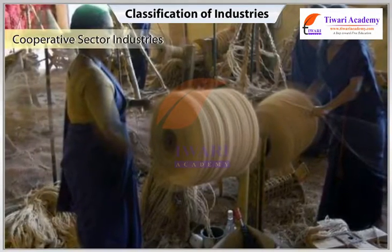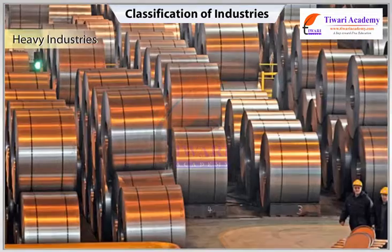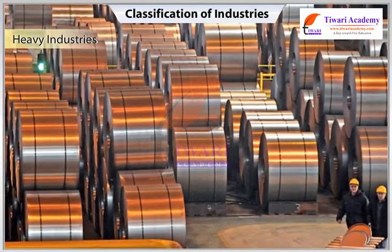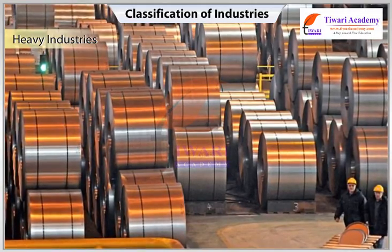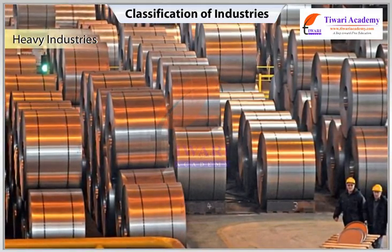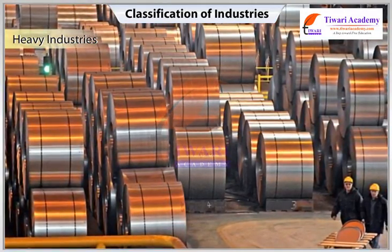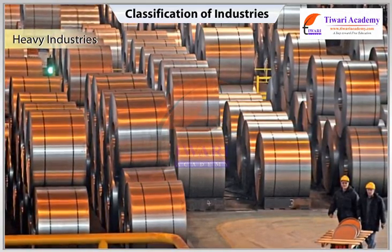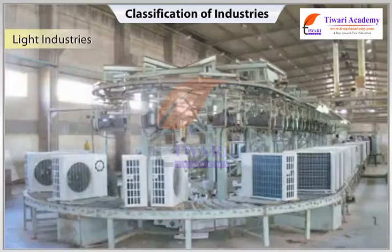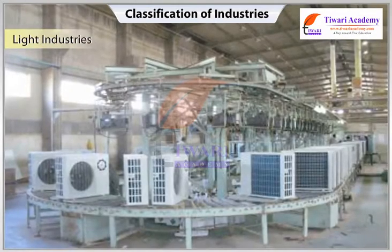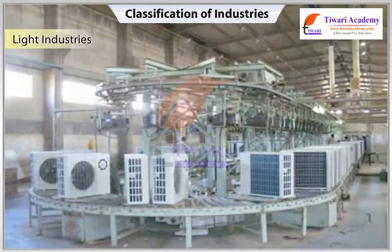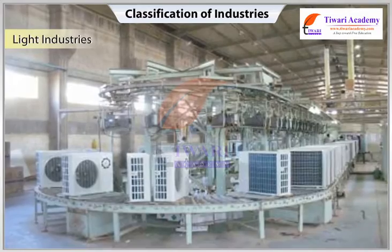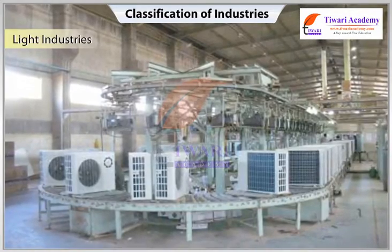Based on the bulk and weight of raw material and finished goods: Heavy industries use heavy and bulky raw materials and produce products of the same category — such as iron and steel. Light industries use light raw materials and produce light goods, such as electrical industries.